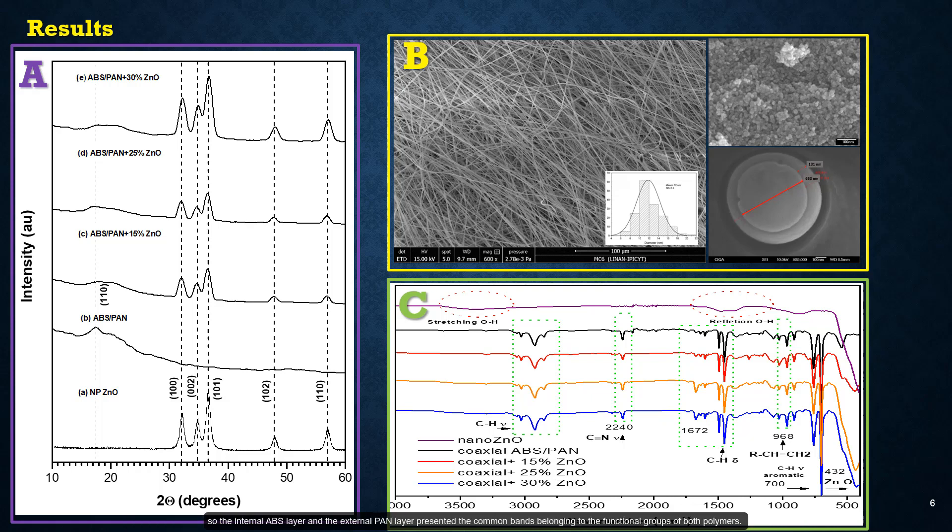The infrared analysis spectra of the fiber systems in figure C show that the electrospinning process does not modify the chemical structure of the starting materials. The internal ABS layer and the external polyacrylonitrile layer present the common bands belonging to the functional groups for both polymers. The incorporation of nanoparticles to the polymer composite fiber produces very small differences in wave numbers in the infrared spectral analysis. However, the intensities decrease slightly with respect to the pristine zinc oxide nanoparticles, from which it could be inferred that the interaction between the zinc oxide nanoparticles and the ABS polymer matrix is physical and not chemical.